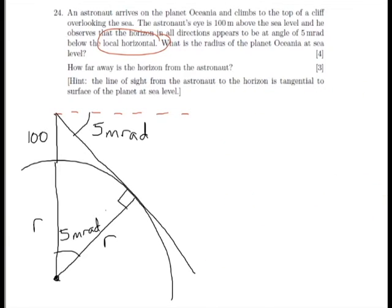The second part of the question wants us to work out this distance here from the observer to the horizon. So let's label that distance x, and we now have a Pythagoras problem.